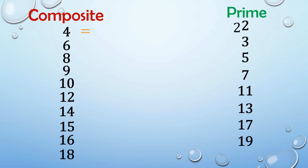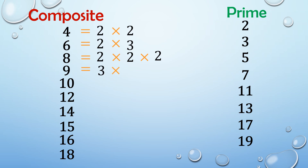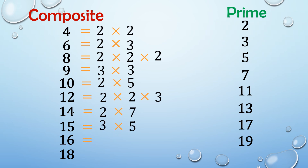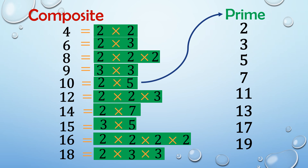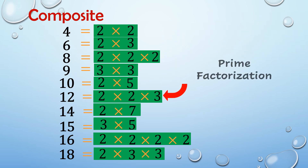We can get 4 by multiplying the prime numbers 2 and 2. The second composite number is 6 — we can multiply 2 and 3 to get 6. The next composite number is 8; we get 8 by multiplying 2 times 2 times 2. The next composite number is 9; we can obtain 9 by multiplying 3 times 3. We can keep going like this, and you would see that all composite numbers are made by multiplying different combinations of prime numbers together. And these combinations are called prime factorization.